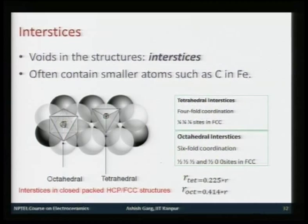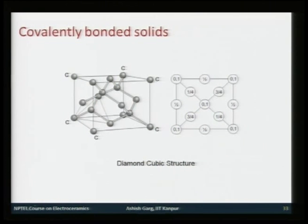These interstices are important from the point of view of understanding ceramic structures. Tetrahedral and octahedral interstices in close-packed solids (FCC or HCP) are especially relevant. The layer sequence helps visualize octahedral and tetrahedral sites; the exact direction and location in the real unit cell you should work out yourself. Most of the structures discussed so far are followed by metals.